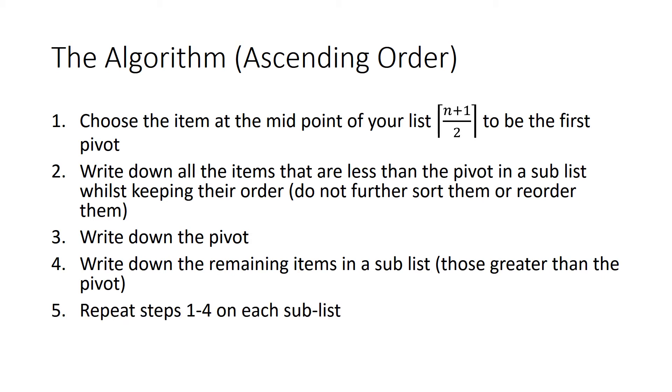Then you're going to need to repeat steps 1 to 4 on each sublist. Once all the items have been chosen as pivots, this is how the computer knows it's done and now you can stop. So that might have been a bit complicated to follow, but it's okay because we're going to go and do an example now.